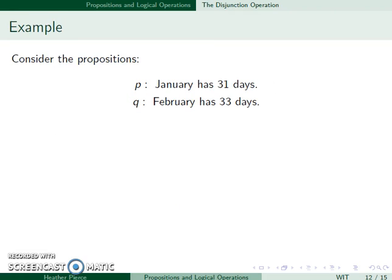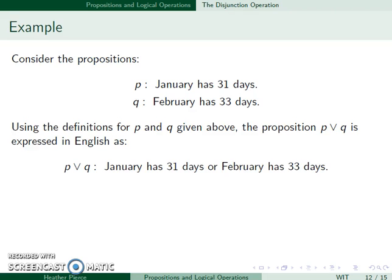So we'll go back to our propositions that January has 31 days and February has 33 days. In English, this is stated as January has 31 days or February has 33 days.